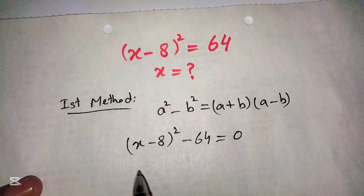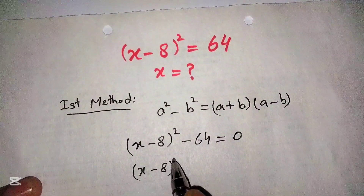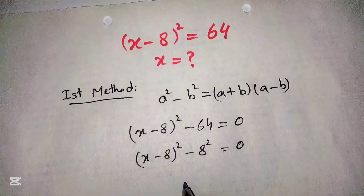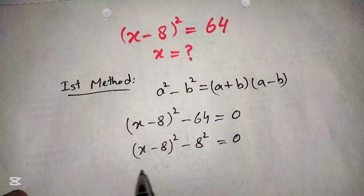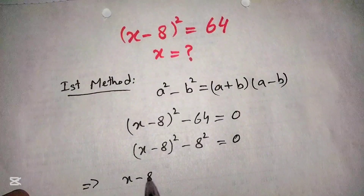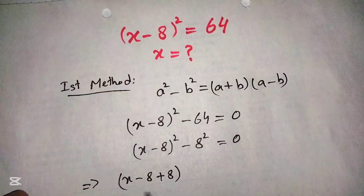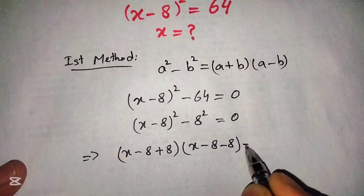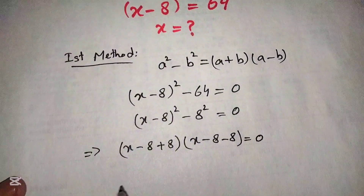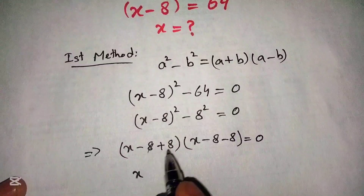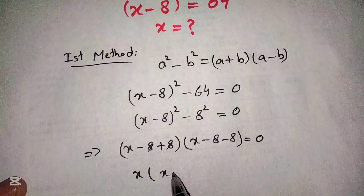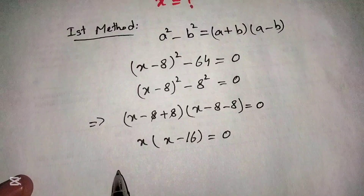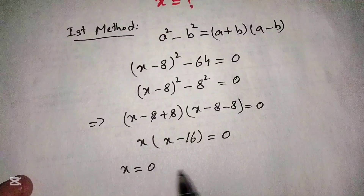Now, (x - 8)² minus 8² equals 0, since 8² = 64. Applying the difference of squares formula, we get (x - 8 + 8)(x - 8 - 8) = 0. Simplifying, the 8s cancel in the first factor, giving us x(x - 16) = 0.